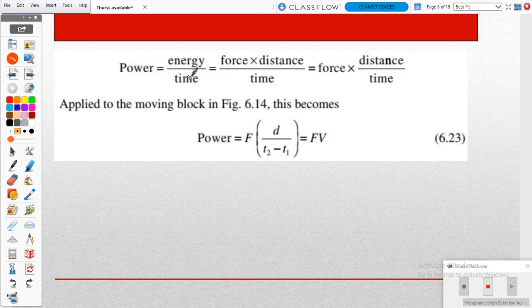Power equals energy per time - how much amount of energy we are given per second, that is the power. Here we are going to further expand our energy into force multiply distance. Next we divide that distance per time - we already know that is velocity. So we can easily get the formula for power. Power equals the product of force multiply velocity.